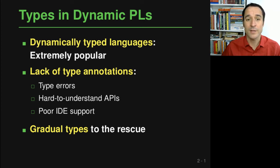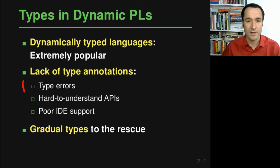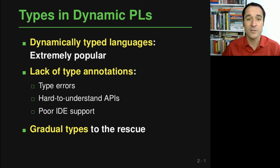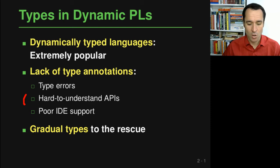One of the most obvious problems is that you may have type errors that are not statically detected but maybe only at some point once your program is running. Type annotations are also useful to understand APIs — without them, APIs are harder to understand. Finally, the lack of type annotations leads to poor IDE support, because IDEs can make better suggestions if they know the types of functions and variables.